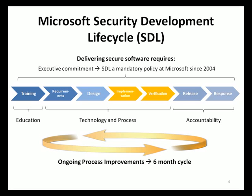In the requirements phase, requirements for security and privacy must accompany functional requirements of the software being created. Such requirements may include the use of encryption, authentication, and other security measures based on the business requirements, exposure, and sensitive data. A security and privacy risk analysis is performed at this stage. In addition, the threshold for security and privacy, or bug bar, is defined during this phase to ensure that bugs with certain severity are addressed and resolved before the software is officially released.